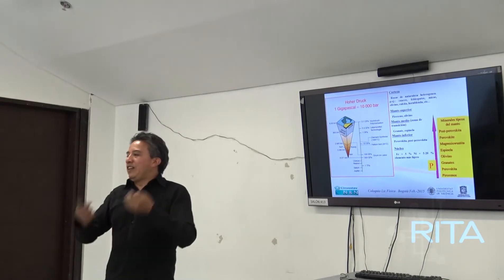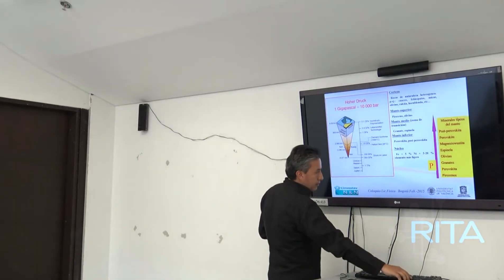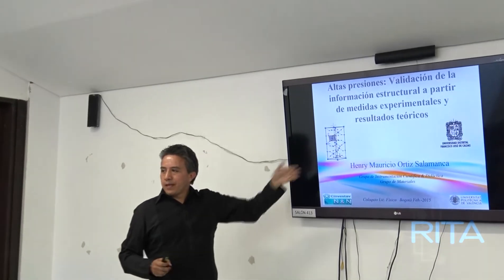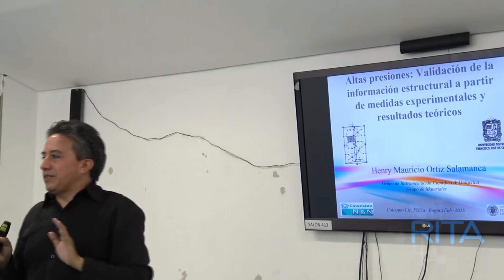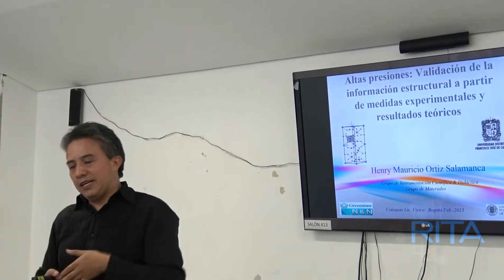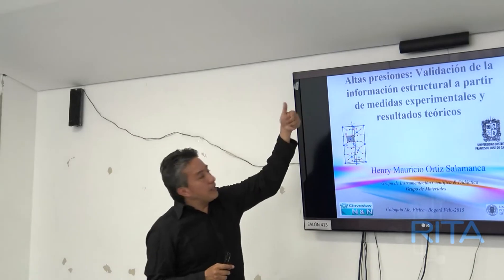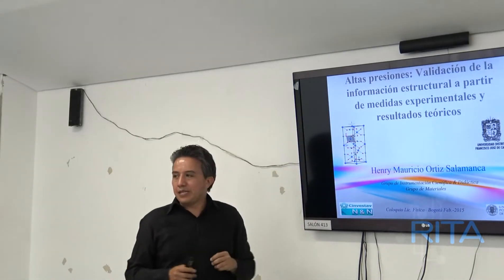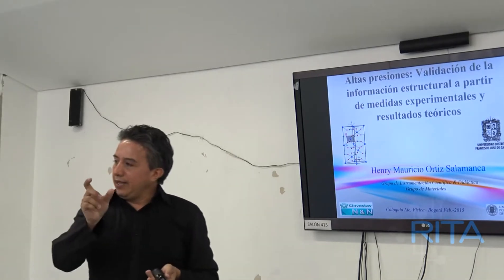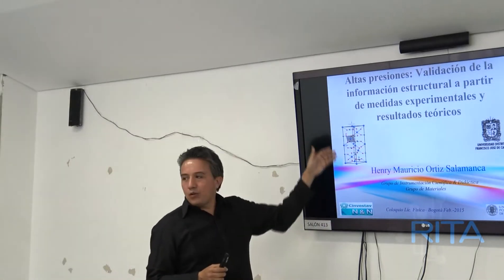¿Por qué estructural? Lo primero y fundamental que hay que hacer antes de poder estudiar materiales es conocer su forma, cómo se organizan sus átomos, su estructura. A partir de ahí podemos empezar a estudiar propiedades ópticas, térmicas, etcétera. Por eso hablamos únicamente de validación estructural: necesitamos conocer cómo es su estructura, es decir, cómo los átomos se organizan de tal forma que generan una celda cuya reproducción me genera el material. Uno se dedica a estudiar solo esta celda, como si fuera un ladrillo.